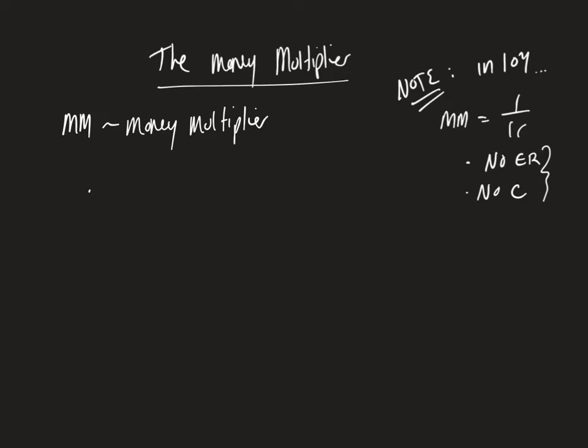So the overall money supply, therefore, is going to equal that monetary base, so that initial level of high-powered money, times the money multiplier. That is how we figure out the money multiplier.